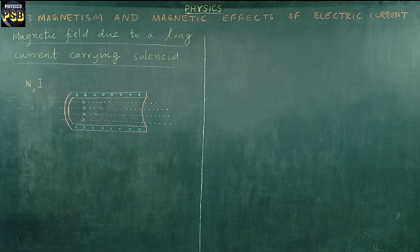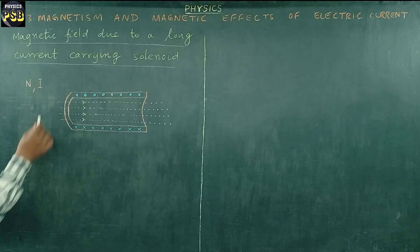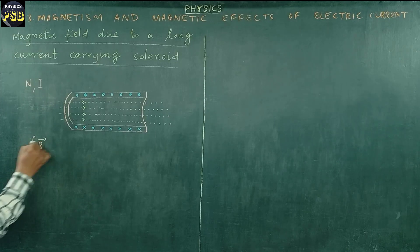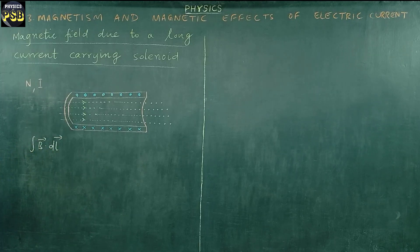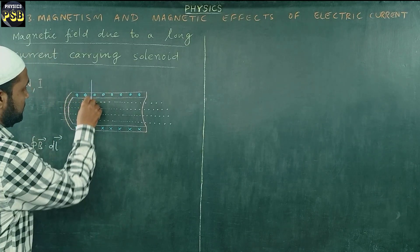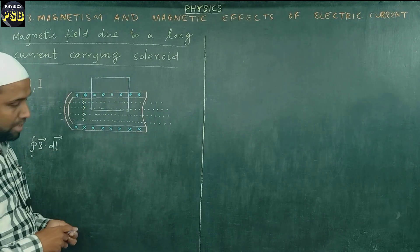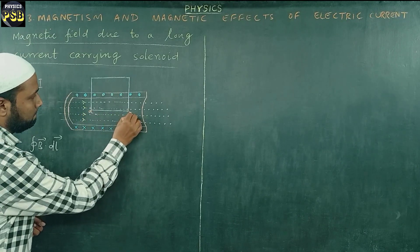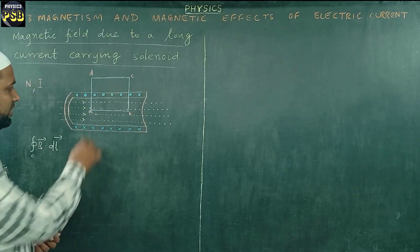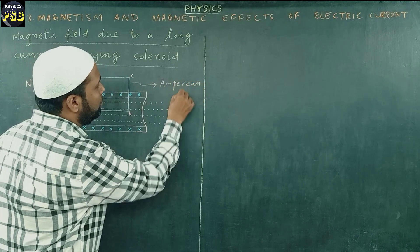So let us go ahead. I am going to apply Ampere's circuital law. What does Ampere's circuital law say? It says that the line integral of magnetic field over a closed loop — the Ampere loop — in this case I take a rectangular Ampere loop, which looks something like this. This is the Ampere loop in the form of a rectangle. I name the corners A, B, C, and D. Here A, B, C, D represents the Ampere loop.